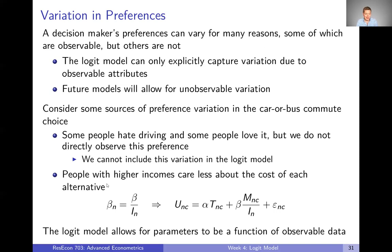But maybe we also think that people with higher incomes care less about cost — they'll be less sensitive to the cost of different alternatives. So instead of having one cost parameter, there's actually a cost parameter beta subscripted by n, because this parameter is going to vary for each decision maker. In fact, it's going to be some common beta parameter divided by the decision maker's income, so we can allow this kind of preference variation to enter our model because it's based on observable data.